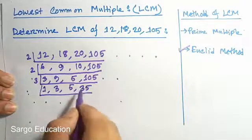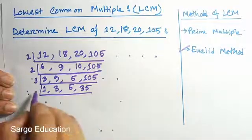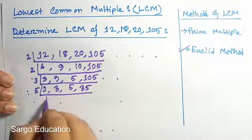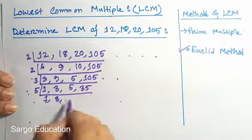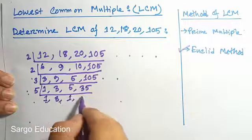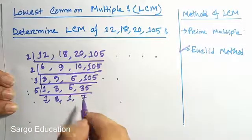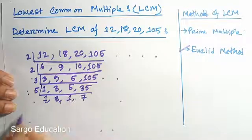Now 5 and 35 can be divided by 5, so we take 5 here. 1 is 1, 3 is 3, 5 goes 1 time, and 35 goes 7 times. So the required LCM: